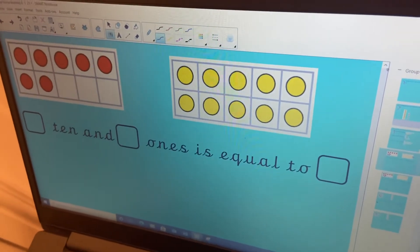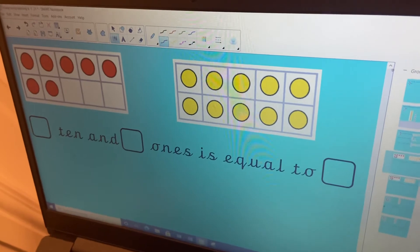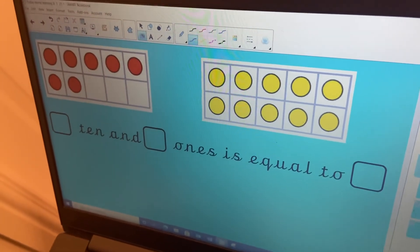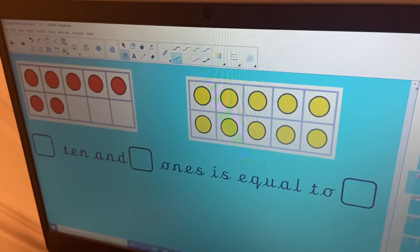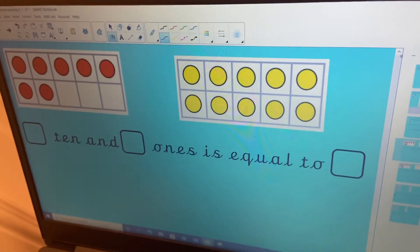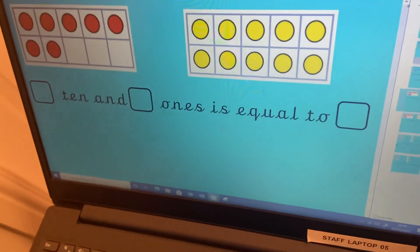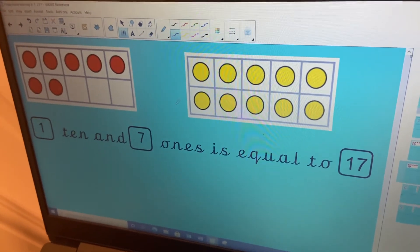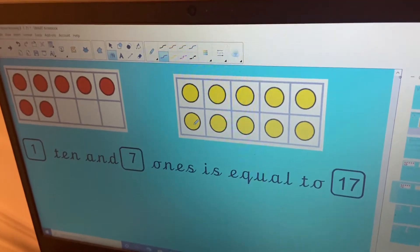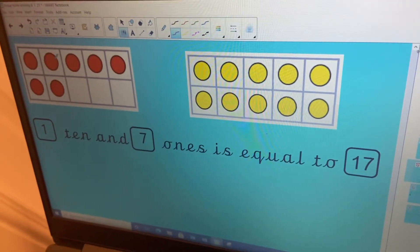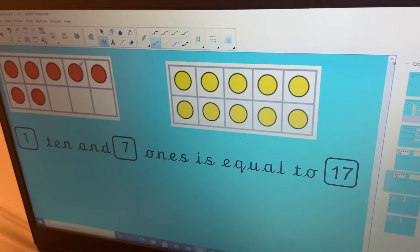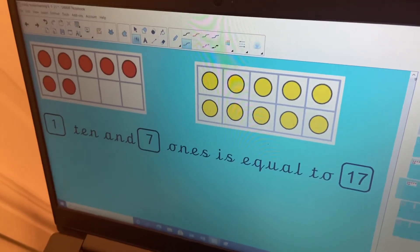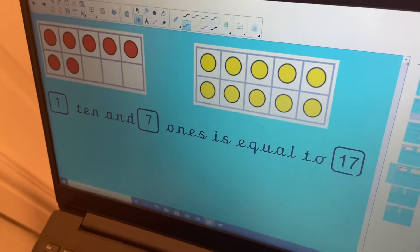And this one here, I want you to have a little look at it. And I want you to fill in how many tens and how many ones and you can write what it's equal to. So pause the video and have a little go. So we've got one ten and we've got one, two, three, four, five, six, seven ones. So we've got one ten and seven ones is equal to 17.